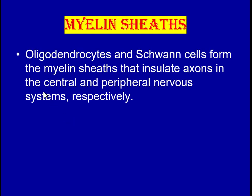Regarding the myelin sheath: oligodendrocytes and Schwann cells form the myelin sheath that insulates axons in the central and peripheral nervous systems respectively. Oligodendrocytes cover the axons in the central nervous system, and Schwann cells cover the axons in the peripheral nervous system. This sheet wraps multiple times around the axon to form the myelin sheath.